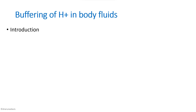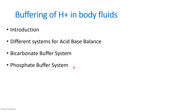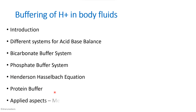When such a question is asked in an exam, first write the introduction covering the importance of acid-base regulation. Then write about the different systems: body fluid buffers, the respiratory system, and the renal system. Then cover the important buffer systems — bicarbonate and phosphate — mention the Henderson-Hasselbalch equation, write about the protein buffer, and include applied aspects like metabolic alkalosis or acidosis to fetch more marks.